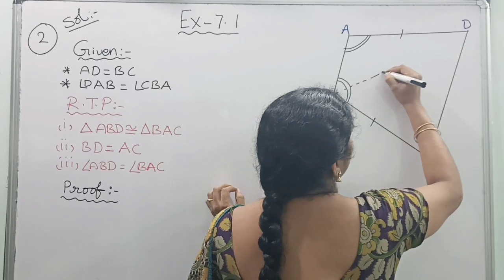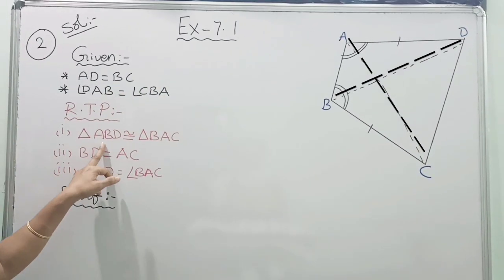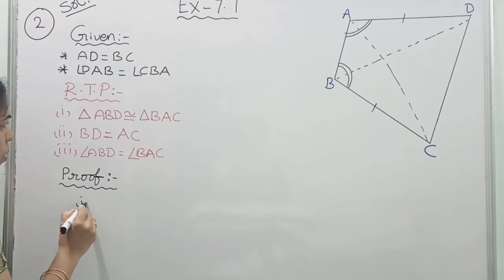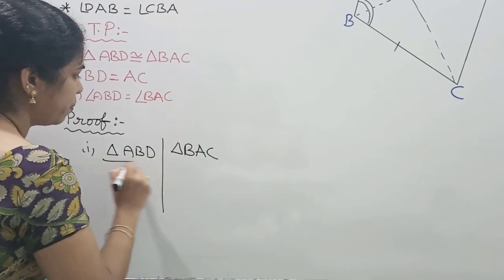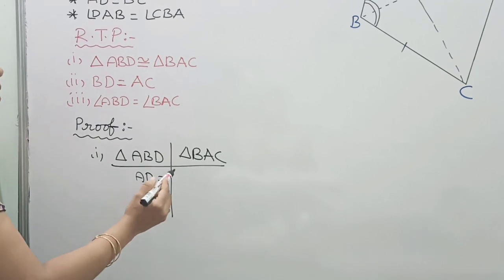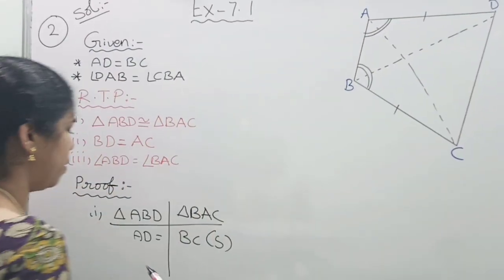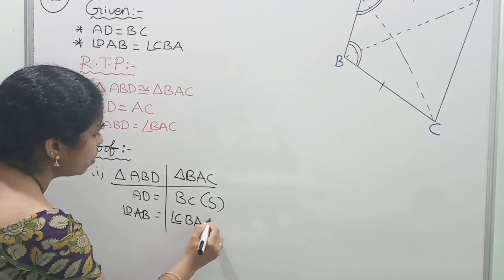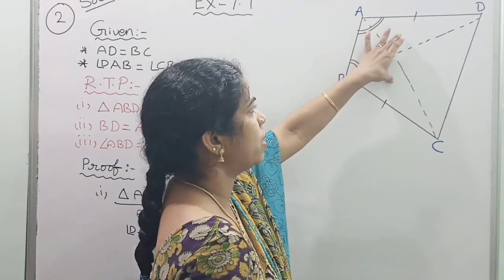After joining the diagonals, we get triangles ABD and BAC. We need to prove them congruent. In triangle ABD and triangle BAC: side AD is equal to BC (given); angle DAB is equal to angle CBA (given, which is the angle). The third part — AB is the common side for both triangles. For A the corresponding part is B, so we write BA equals AB.